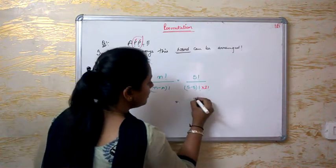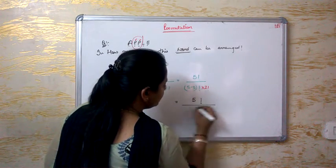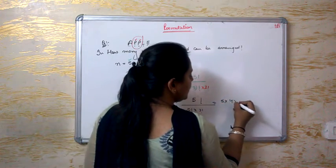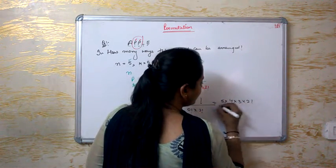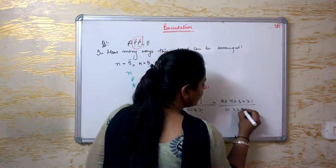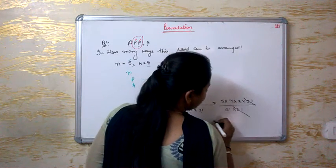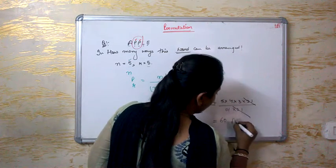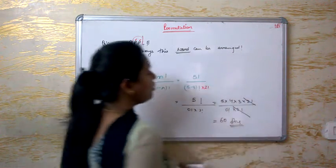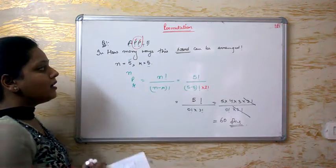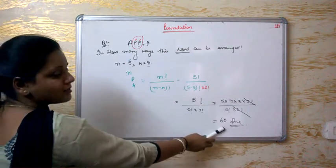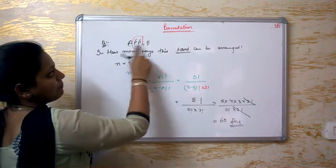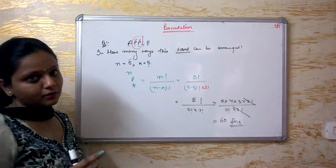Because P repeats twice, that is why we write 2 factorial. So it becomes 5 factorial upon 0 factorial into 2 factorial, which is 5 × 4 × 3 × 2 factorial upon 0 factorial into 2 factorial. The 2 factorials cancel out, and the answer is 60.